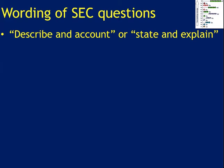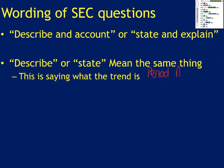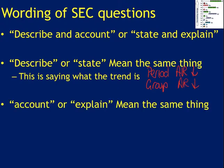So they will either ask you to describe and account or they can say state and explain. And describe and state mean the exact same thing. So if we're talking about atomic radius then we're describing the trend. So across a period it would be that the atomic radius decreases and if it's down a group our atomic radius increases. So that is the describe or the state part.